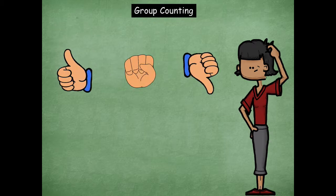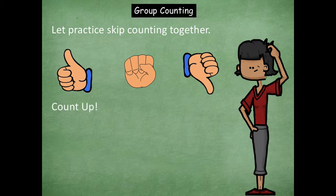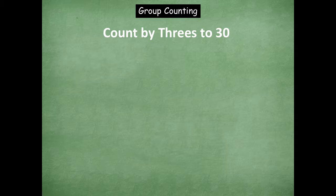So we're going to do some group counting. When we practice our counting together, when you see the thumbs up, you're going to count up. When you see the fist, you're going to stop. And the thumbs down means you're going to count down. We're going to count by threes to 30 to start with. So there's our thumbs up, we're going to be counting up together. Remember, we're going to be counting by threes.